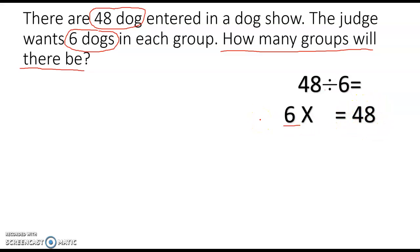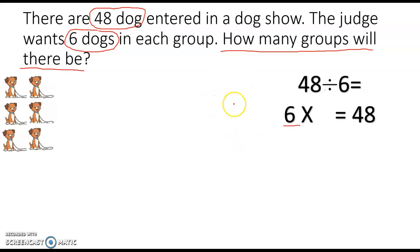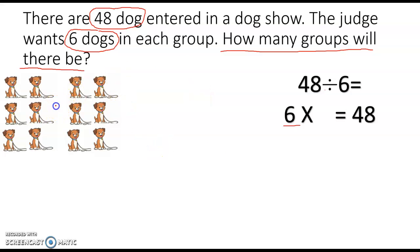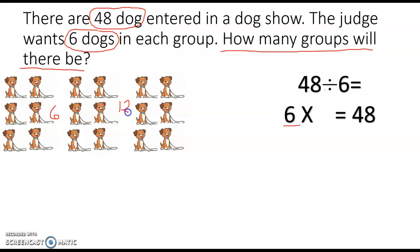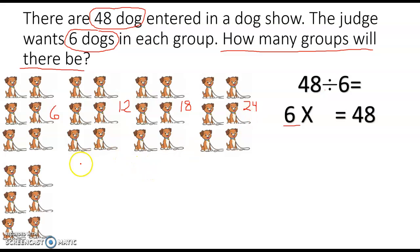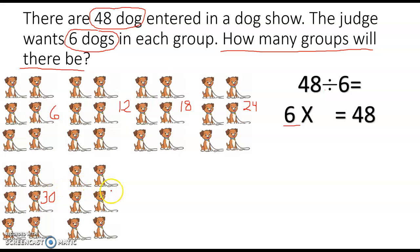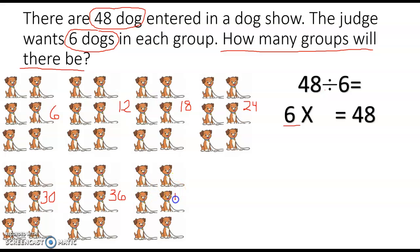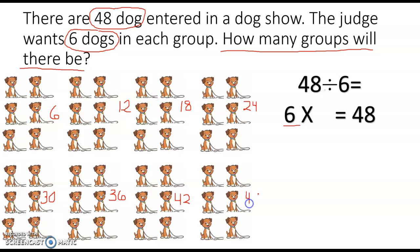So let's make equal groups of six. Here's six dogs. Six plus six is twelve, twelve plus six is eighteen, eighteen plus six is twenty-four. Another group of six is thirty, another group of six is thirty-six, another group of six is forty-two.